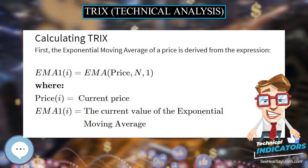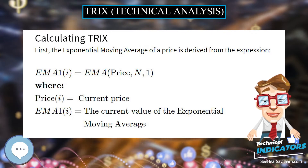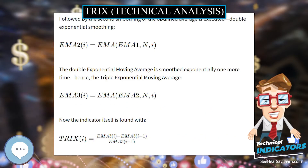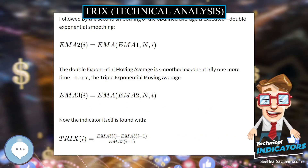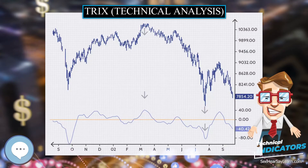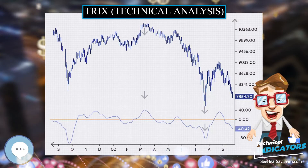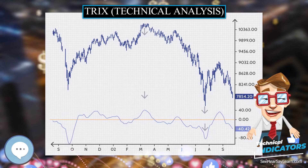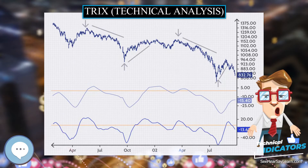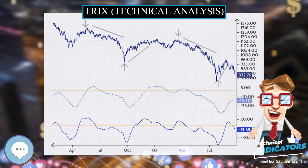TRIX technical analysis — TRIX is a technical analysis oscillator developed in the 1980s by Jack Hudson, editor of Technical Analysis of Stocks and Commodities magazine. It shows the slope, i.e., the derivative, of a triple smoothed exponential moving average.